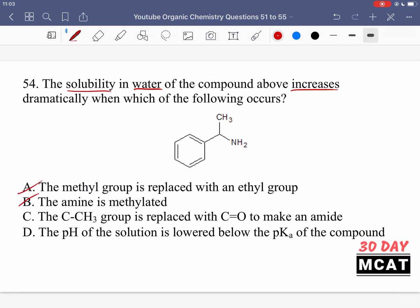Option C is saying if the C-CH3 group is replaced with C=O to make an amide. So if over here we had an amide like that, to a certain extent, this could increase the solubility in water because we're adding a bit more polarity. We are also adding another hydrogen bond acceptor. And so this could increase the solubility in water. However, the solubility of an amide versus this initial amine in water isn't really significantly different.